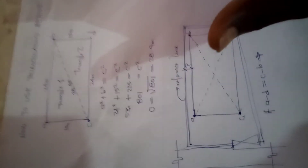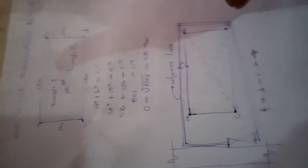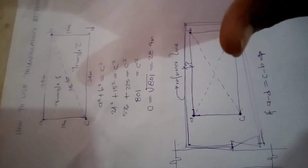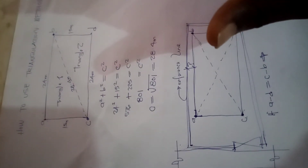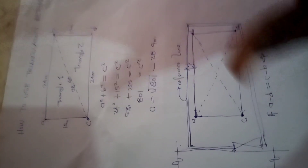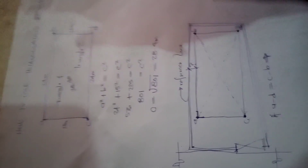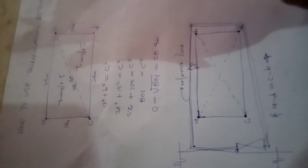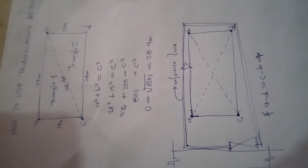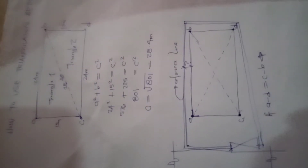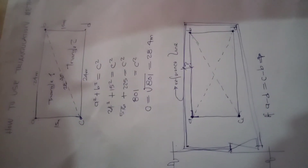This method is called the triangulation method — using triangulation to set out a building. It saves time; you don't need to rely solely on your builder's square. It's very accurate. Thank you for watching this episode. Catch you next time. Bye.